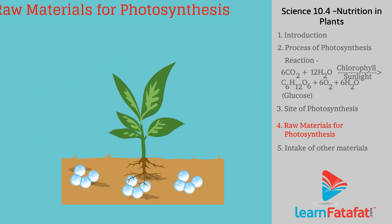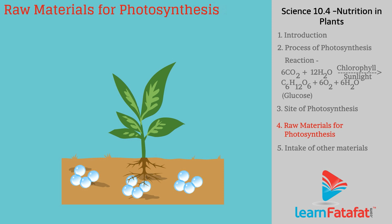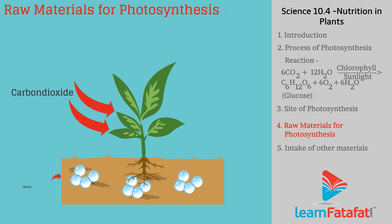Raw materials for photosynthesis: For the process of photosynthesis, plants need carbon dioxide, water, chlorophyll, and sunlight.